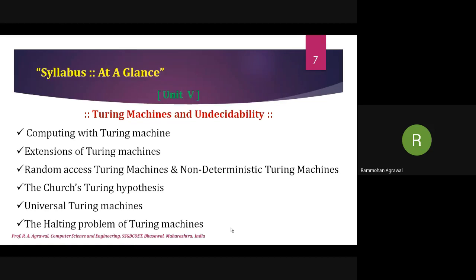So these are the total five units to study. If you count the total number of concepts, there are only 15 concepts in Theory of Computation that have to be understood — 15, not 50. Each unit has one or two concepts, and all five units comprise these 15 concepts.